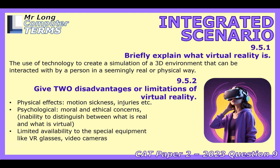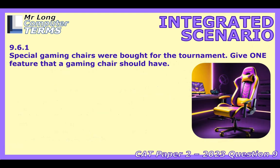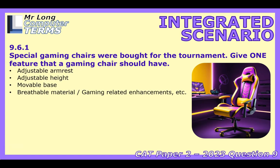Now the grand finale — they're hosting a gaming tournament. First, seating. Question 9.6.1: give one feature of a good gaming chair. The answers focus on ergonomics: adjustable armrests, height adjustment, movable base, and breathable materials. If you're sitting for hours during a tournament, you need proper support. Adjustable armrests help support your arms and reduce strain on wrists and shoulders — better comfort means better focus, potentially better performance, and less risk of long-term injury.